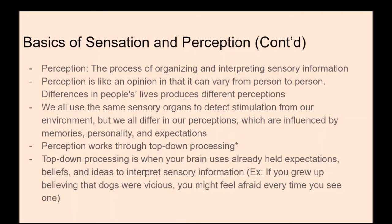Perception works through top-down processing, which is when your brain uses already-held expectations, beliefs, and ideas to interpret sensory information. For example, if you grew up believing that dogs were vicious, you might feel afraid every time you see a dog.